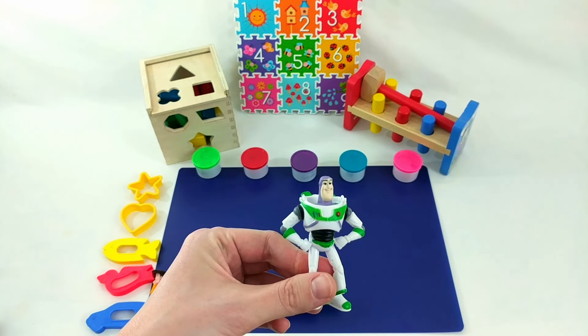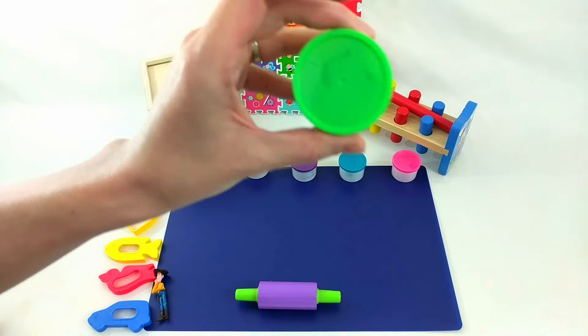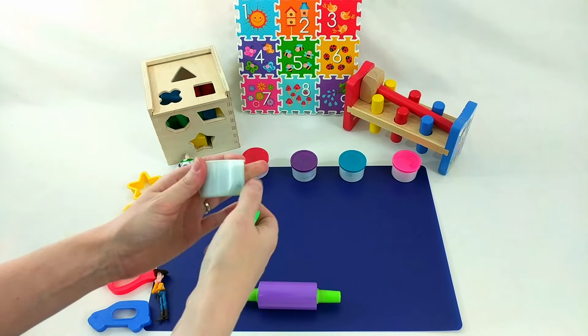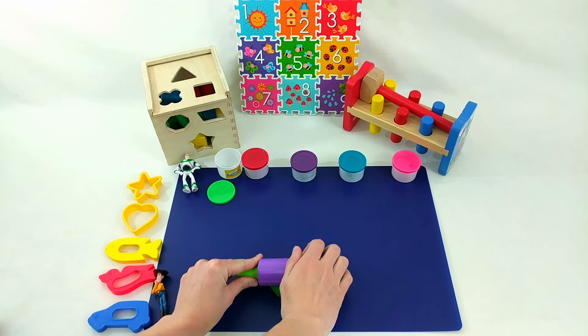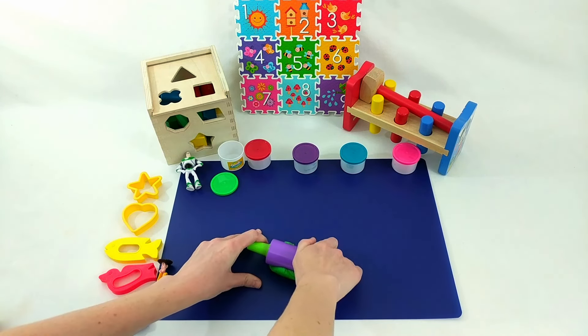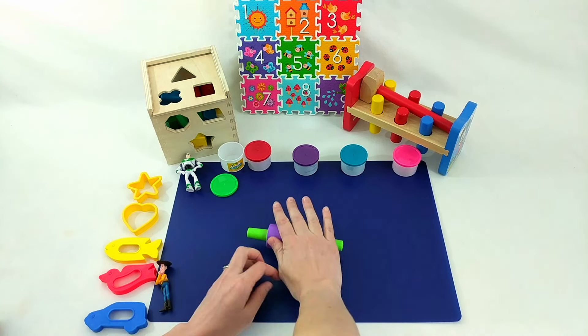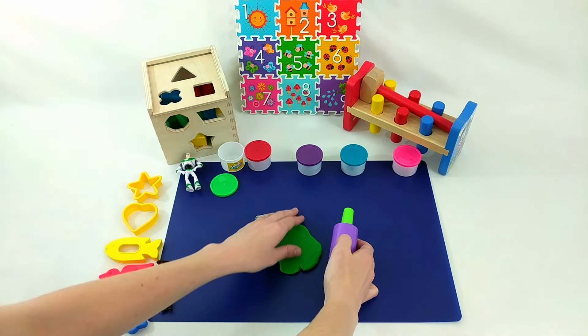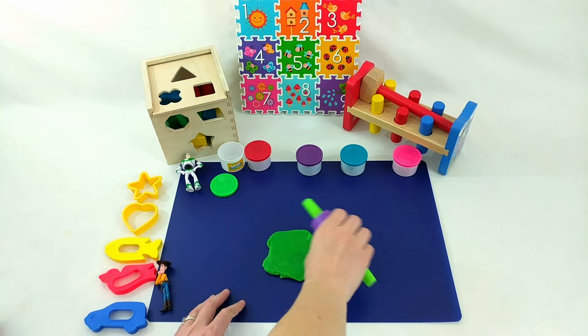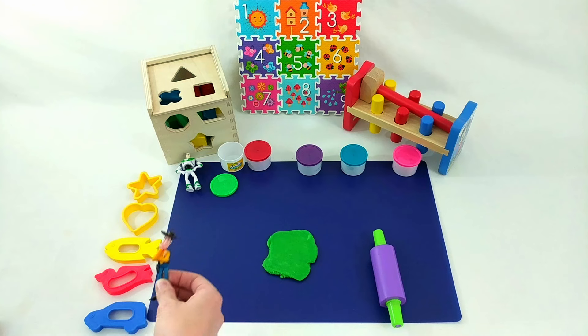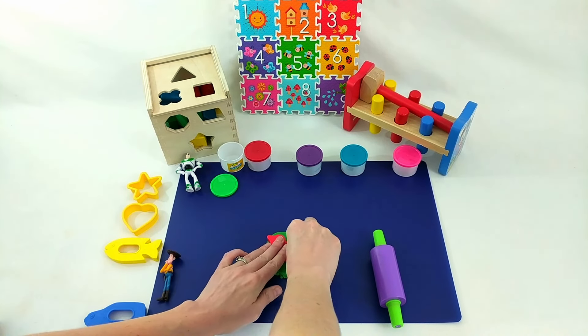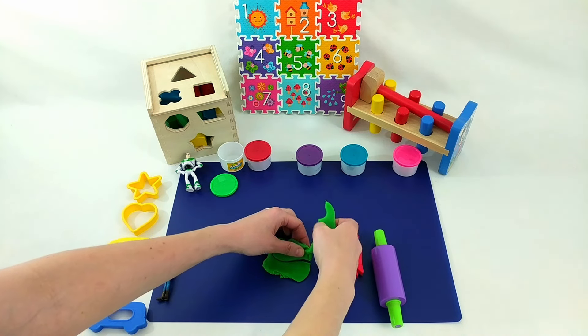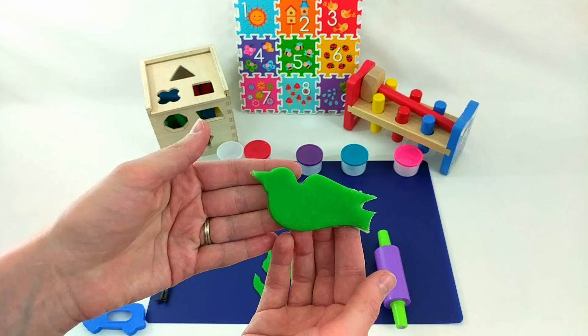Buzz, what color should we start with? Green, alright. So, we'll get out the Play-Doh and roll it out. Okay, now Woody, it's your turn. Which shape are we gonna use? Woody chose a bird. There we go, it's a green bird.